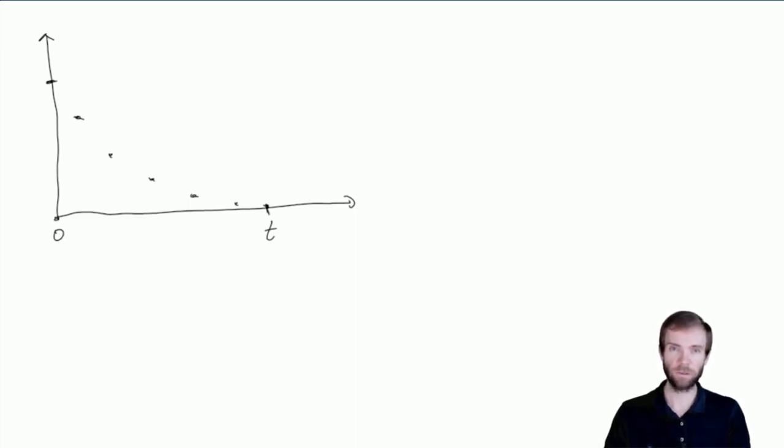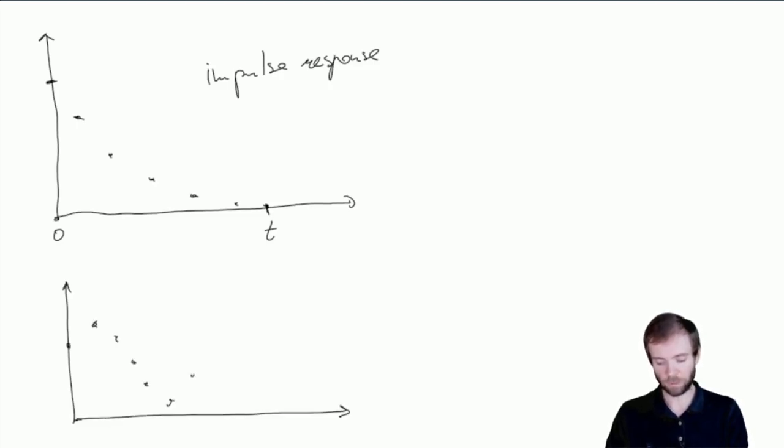So assume that you have this kind of impulse response, that you had some impulse signal, a very short signal, and you have a response of your system to this signal. And now assume that you have some kind of musical signal, so you have a much more interesting wave shape happening here. Now what we can assume is that every such impulse produces the same kind of response, just properly normalized.